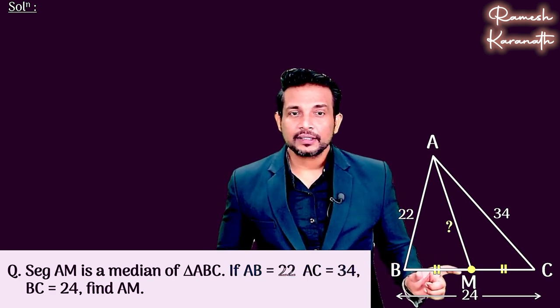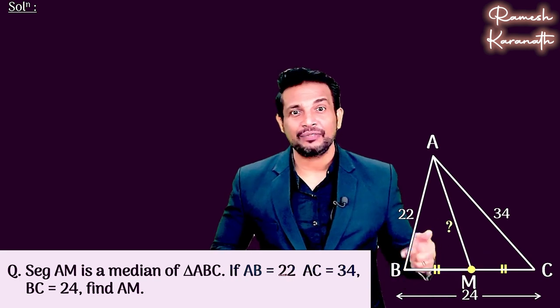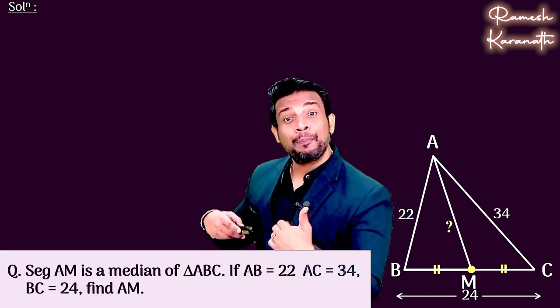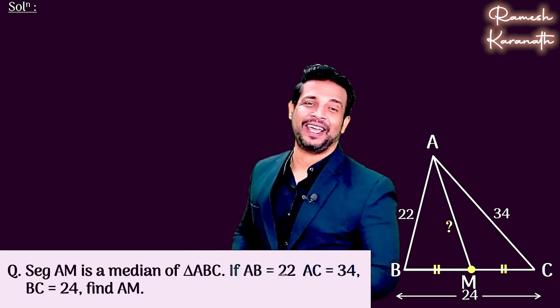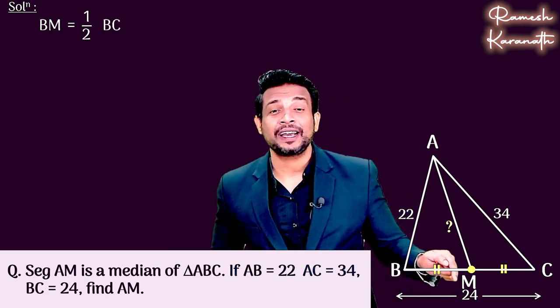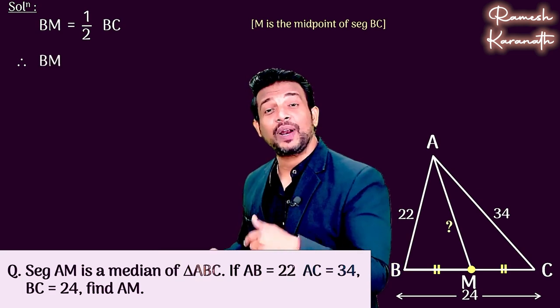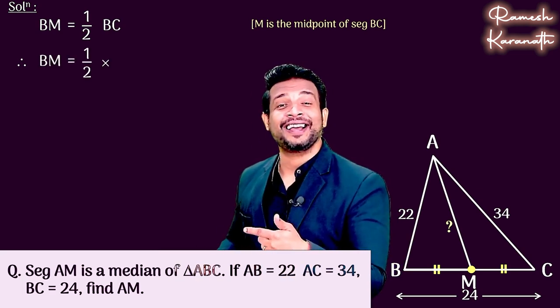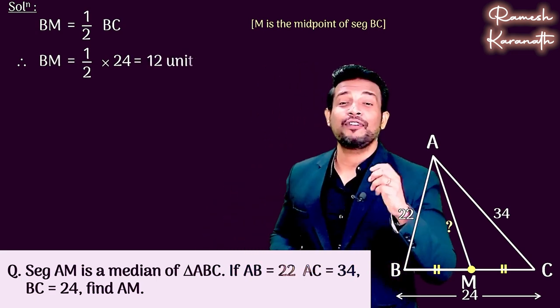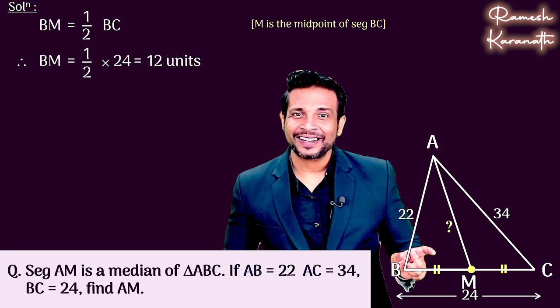Now the equal sides, because we have to find BM or CM, that is half. So first we have to find BM, so we write BM is equal to half of BC. Why? Because we know M is the midpoint of segment BC. So half of 24, that is 12. That means BM is 12 units.